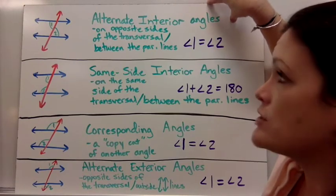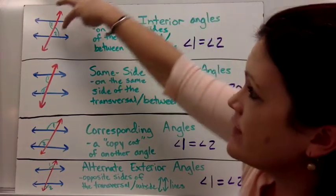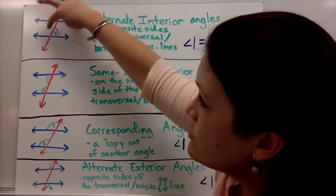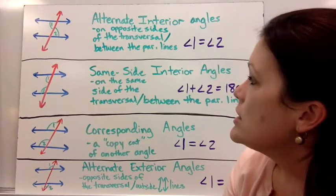If they give us a problem where we have to solve for x or y, we just know that those types of angles would always be equal. Even the ones on the opposite side of that line would also be equal. Let's look at the next type.